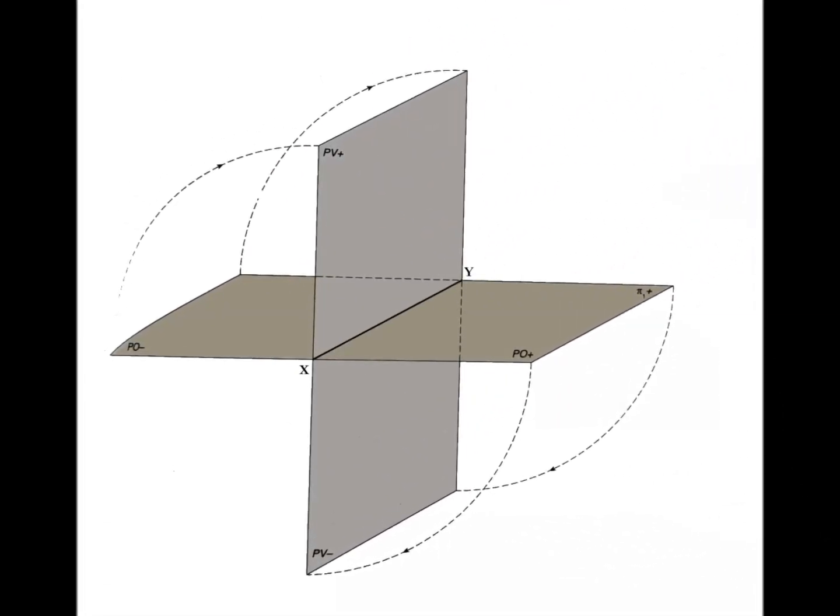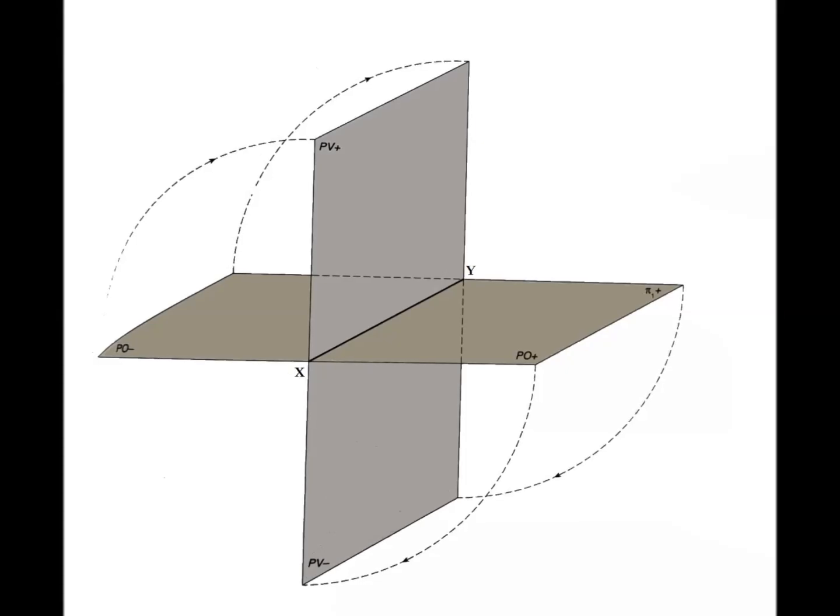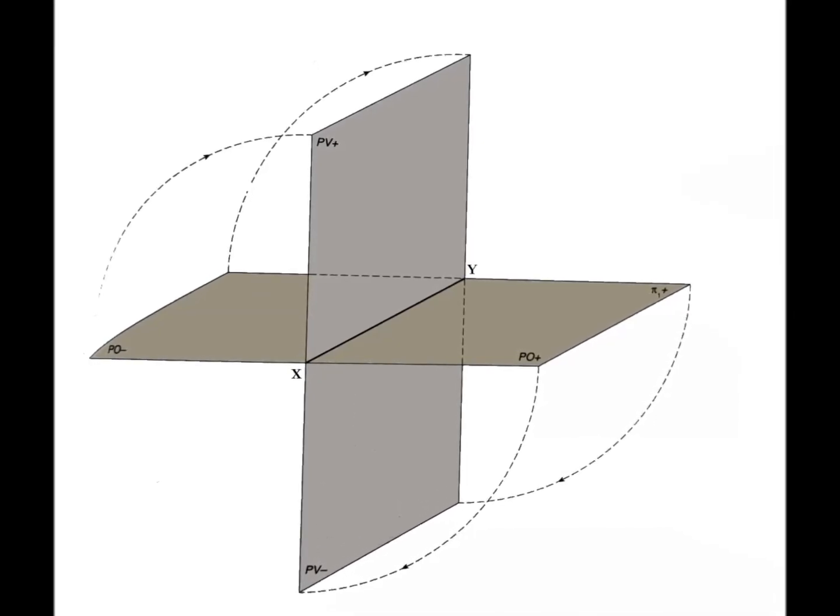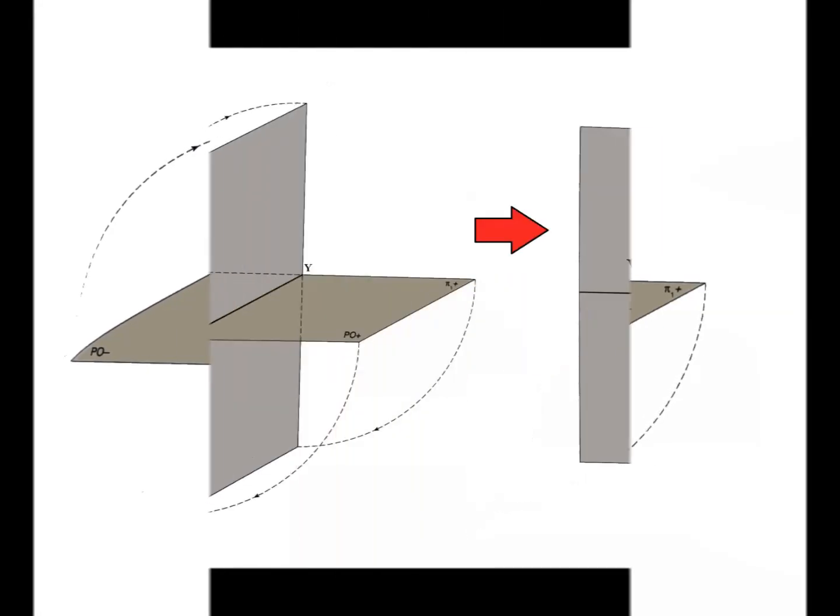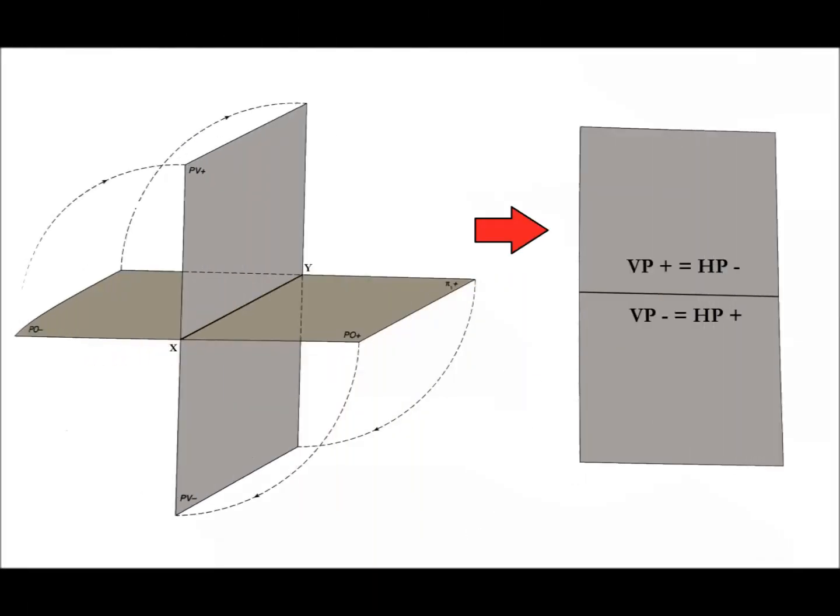This way, the HP and the VP are now on a single plane, the drawing sheet, divided into two parts by the XY line. So, above the XY line is the negative horizontal half plane, and the positive vertical half plane. Below the XY line is the positive horizontal half plane, and the negative vertical half plane.